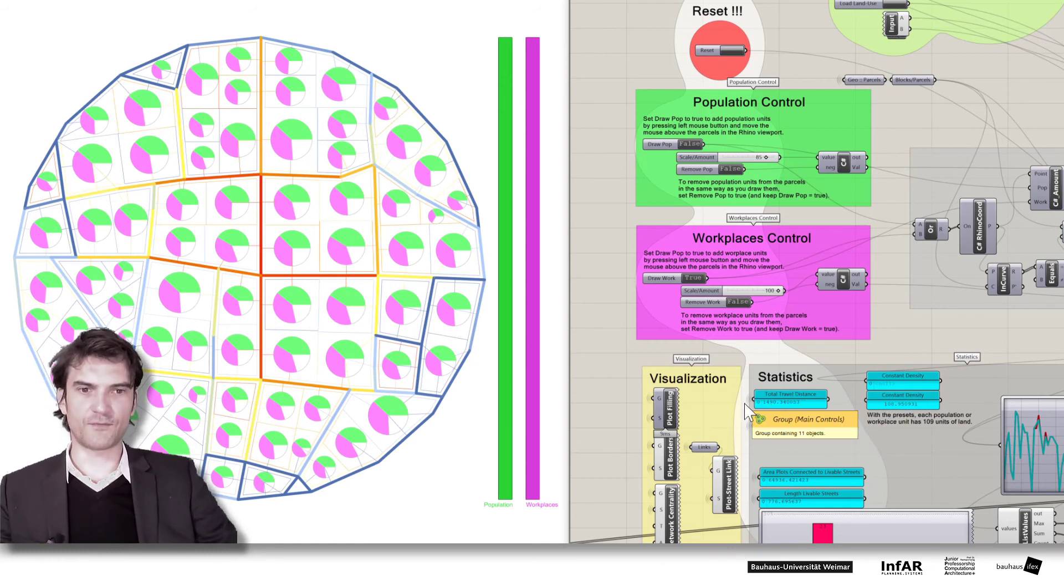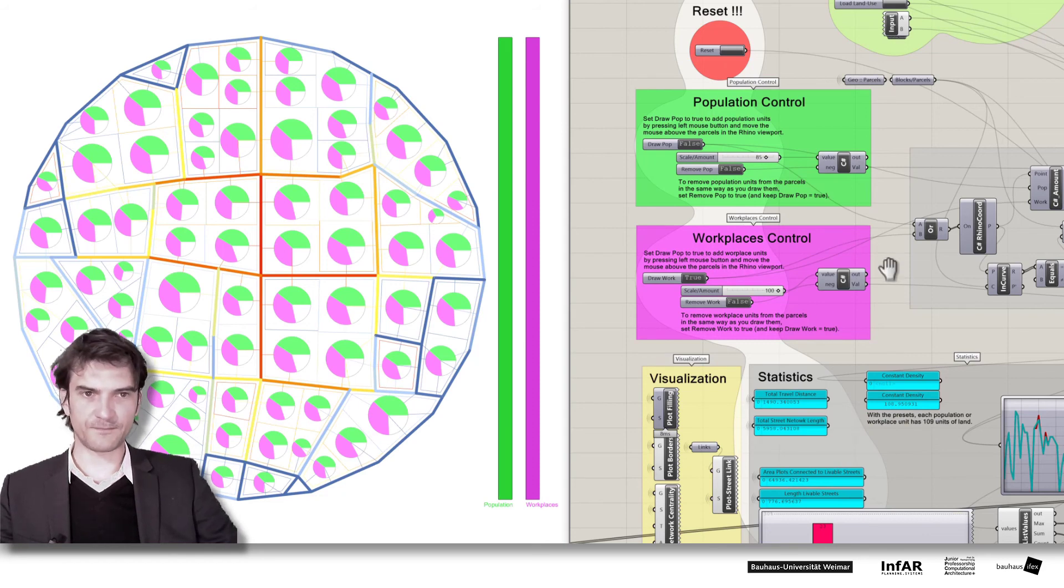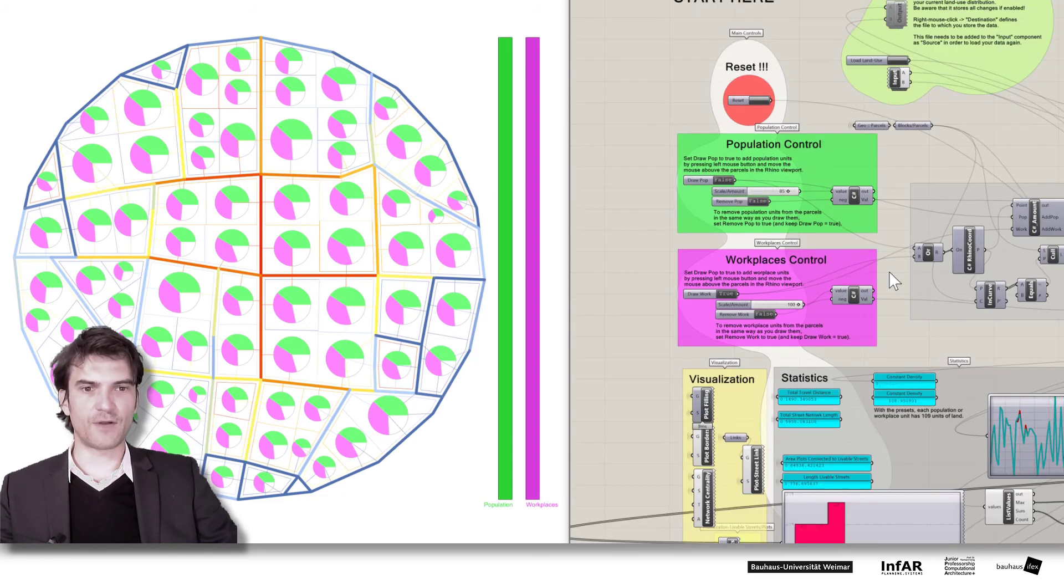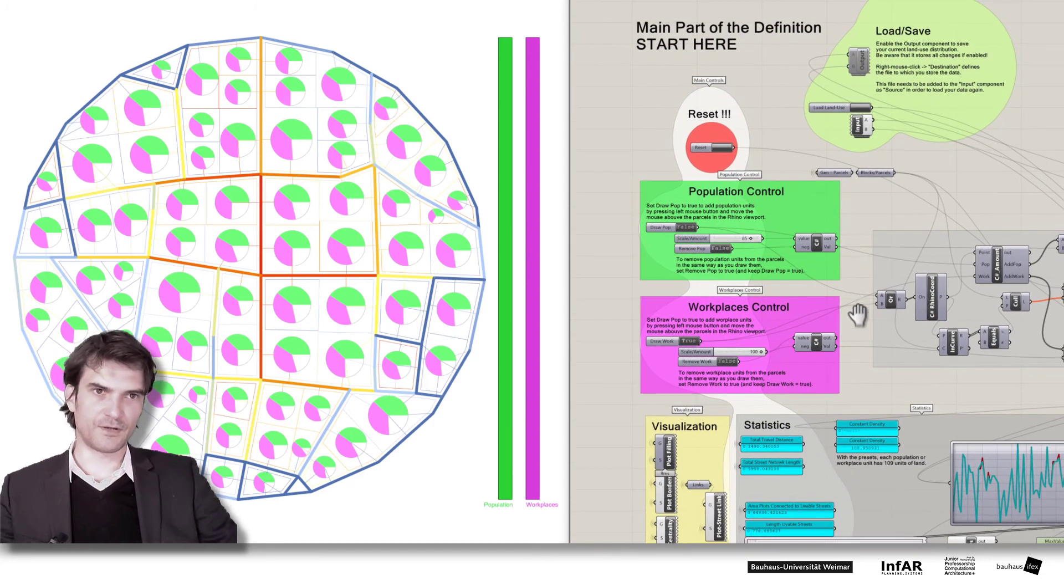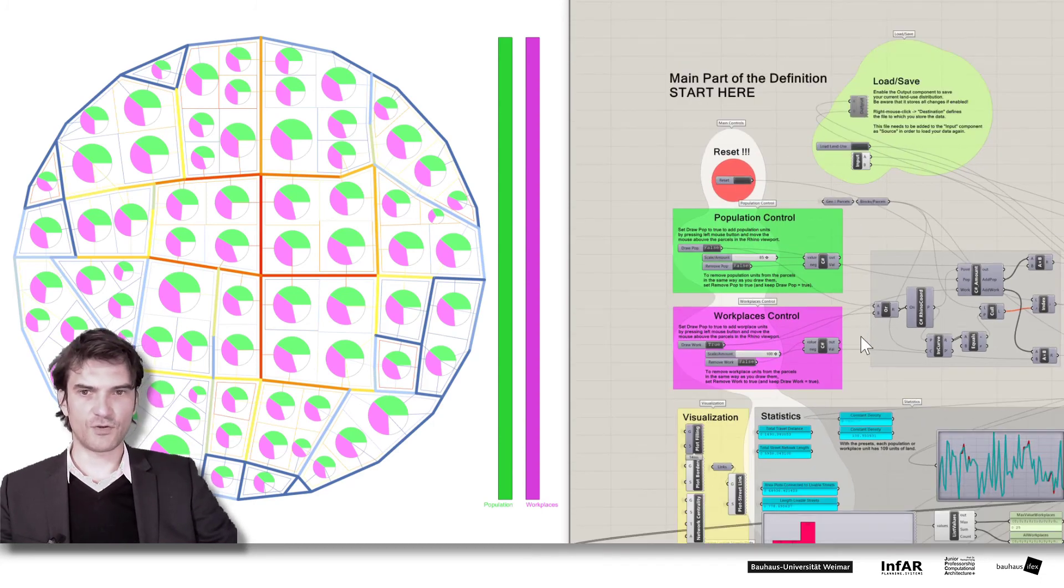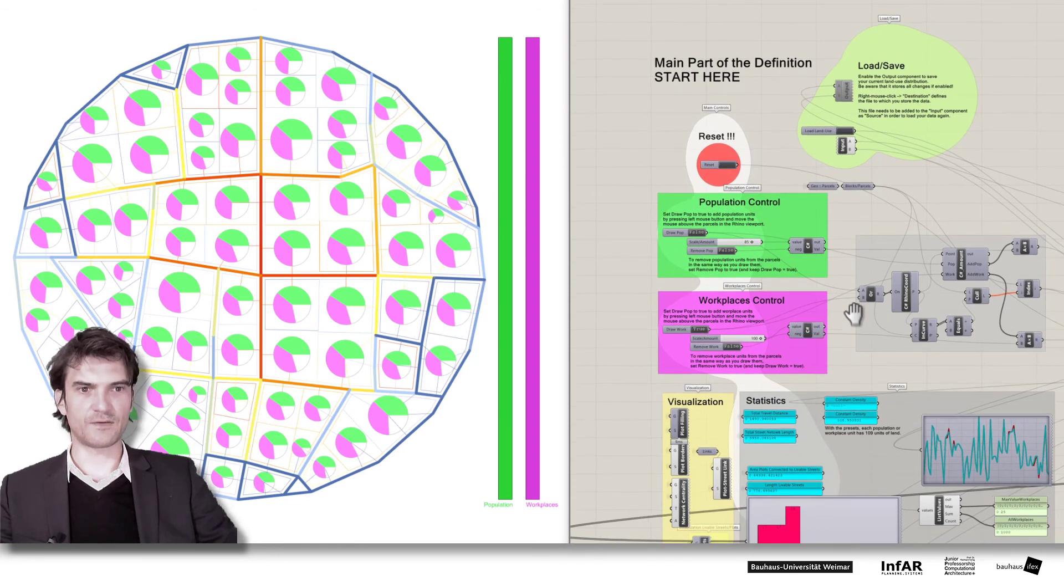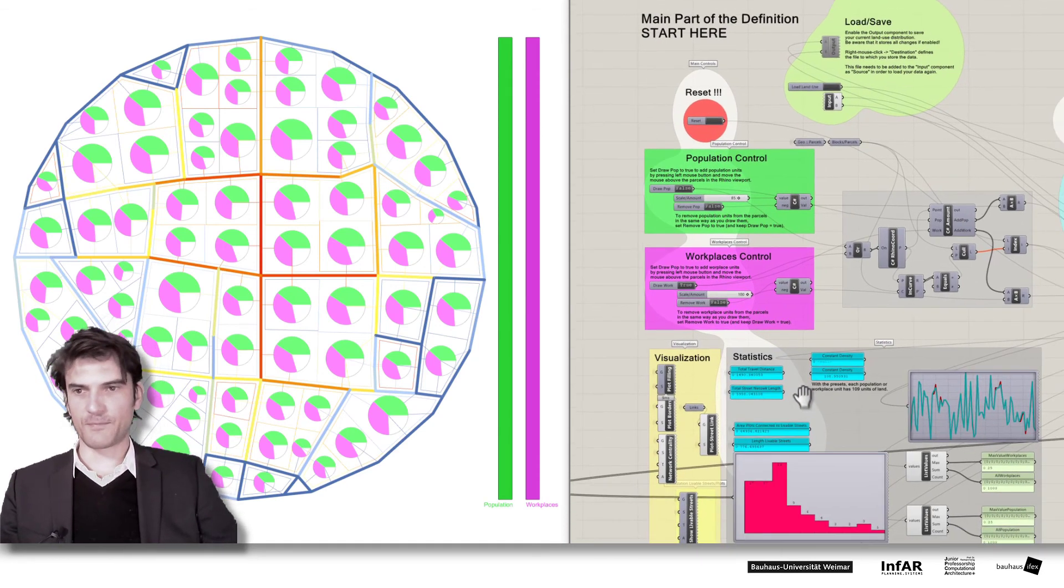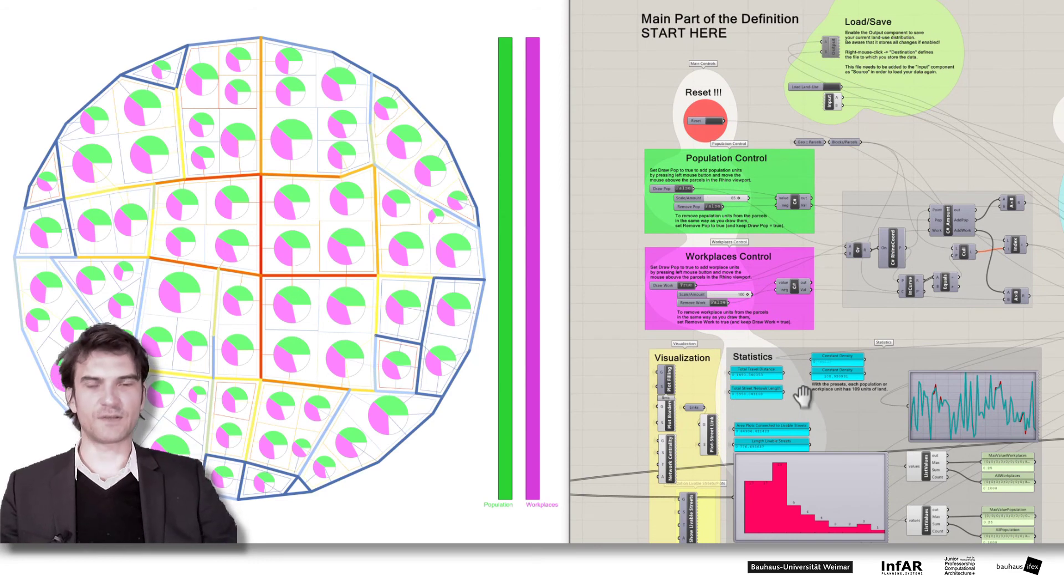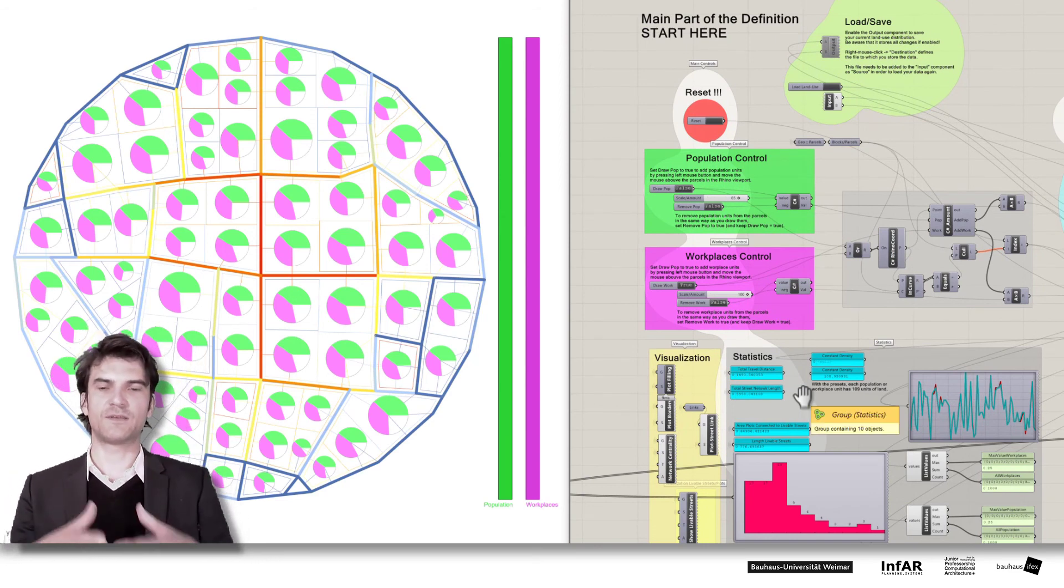And that's exactly what you have to do. You have to be as good as possible. We will also compare your numbers with the numbers from your colleagues. So the idea is to have a small competition. Who comes up with the land use pattern that generates the lowest number of total travel distance. So be smart. Play around.